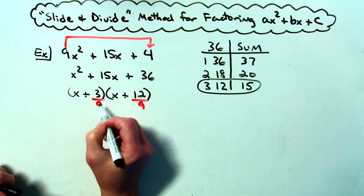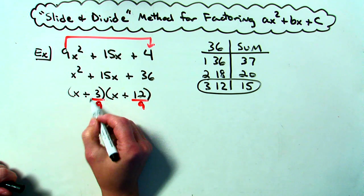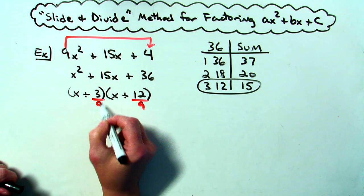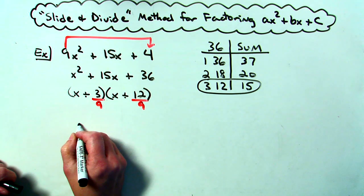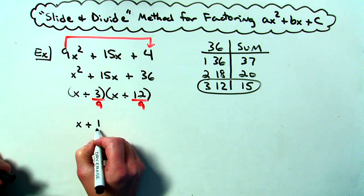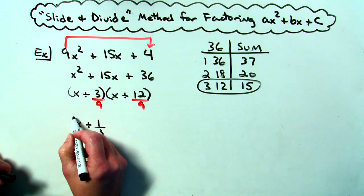However, if you kind of look at these as fractions, what you're going to need to do is if when you're dividing, this is something that can be reduced, you're going to have to reduce it first. So then really, I would have an x plus, and then it's going to be a 1 third if I reduce that.